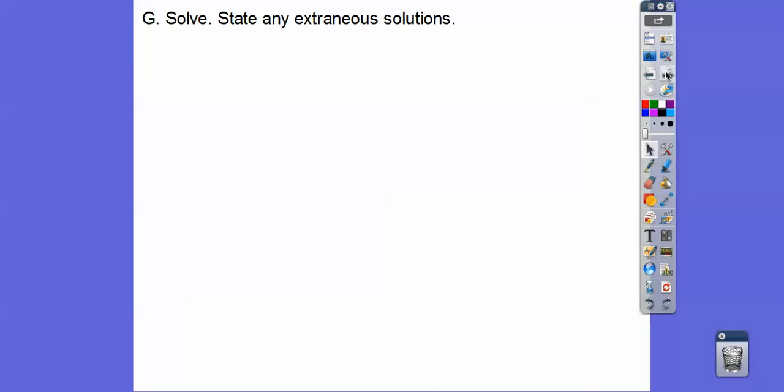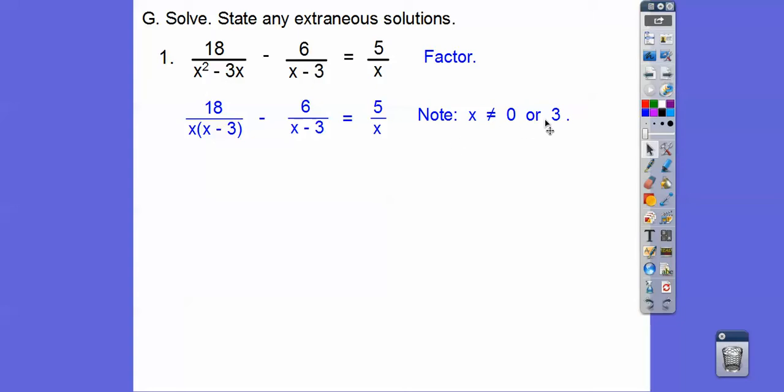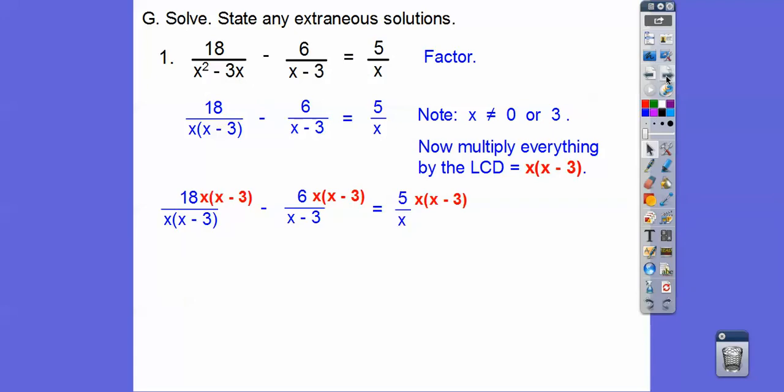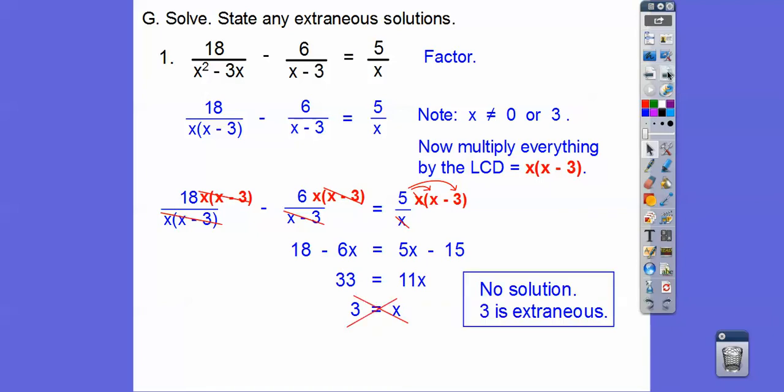So solve, state the extraneous solutions. So this is where we have an equal sign. We get rid of the denominators. And so we still have to find a common denominator. And then we multiply everything by the common denominator. Now, when we solve, if we get x equals 0 or x equals 3, then we toss it out because it'll be a no solution. So every factor, x, x minus 3. And so that's my common denominator. So everything cancels here. You're left with 18. Those cancel. I'm left with 6x. Those cancel. So we're left with 5 times x minus 3. So we get x equals 3. But hey, that was one of the extraneous solutions. So that one's a no solution.